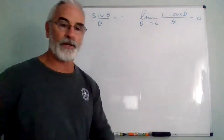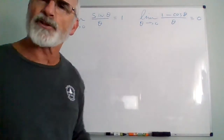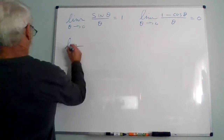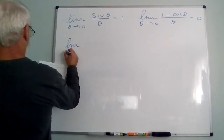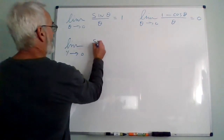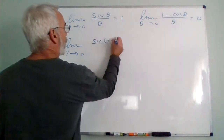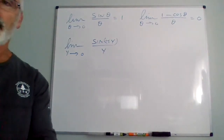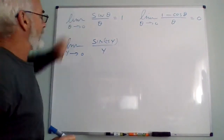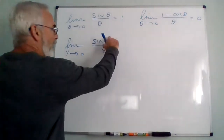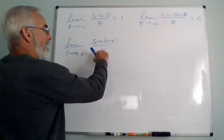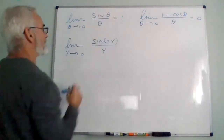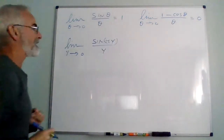We want to go through each problem and talk about what algebra we are actually allowed to perform. The first problem: the limit as y goes to zero of sine of 4y over y. When looking at this, you might say this is simple and just apply the rule, except the argument is 4y and the denominator is y, and theta has to be exactly the same in all three positions, but it's not.